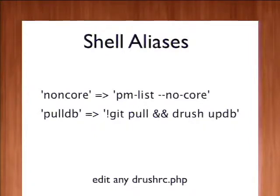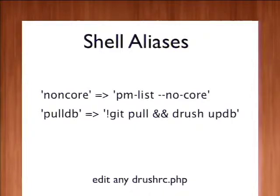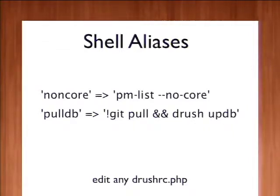On the right-hand side, pm-list and the option --no-core. This is an example of making your own alias for something that you type all the time. I happen to not want to see the core modules when I run pm-list most of the time, so I made a little shortcut for myself: non-core. You run Drush non-core, and Drush translates that into pm-list --no-core.